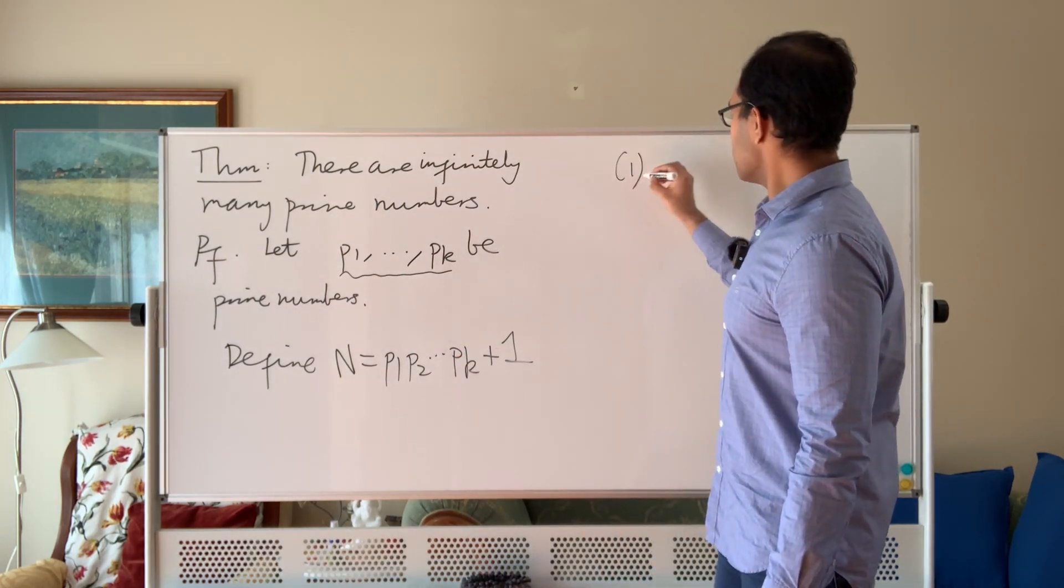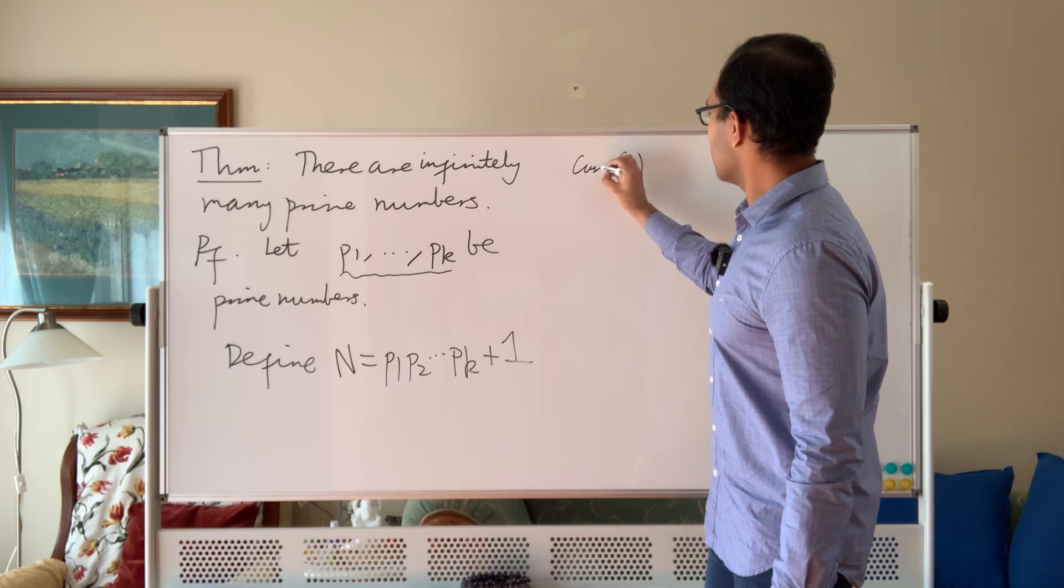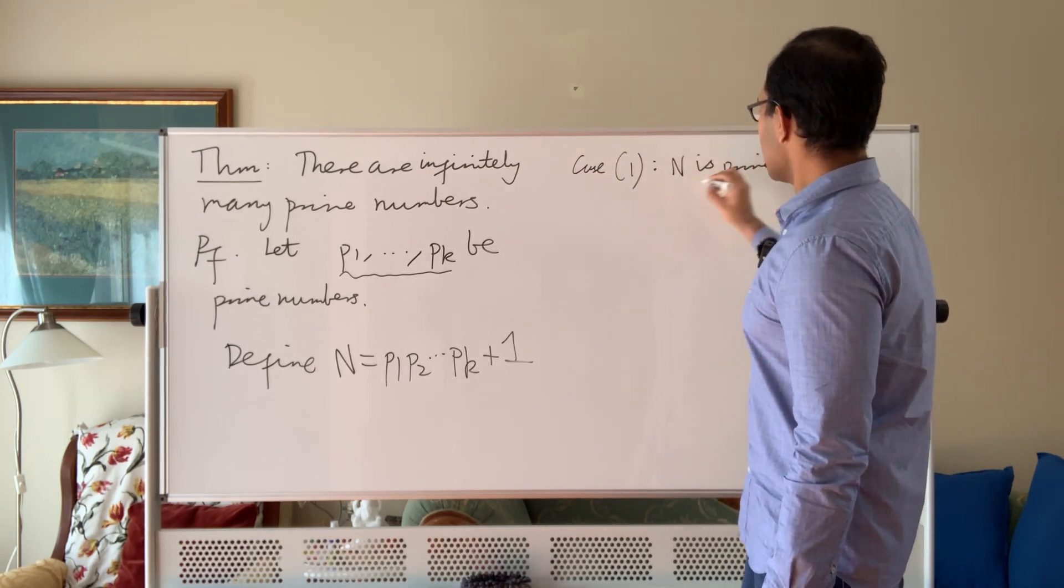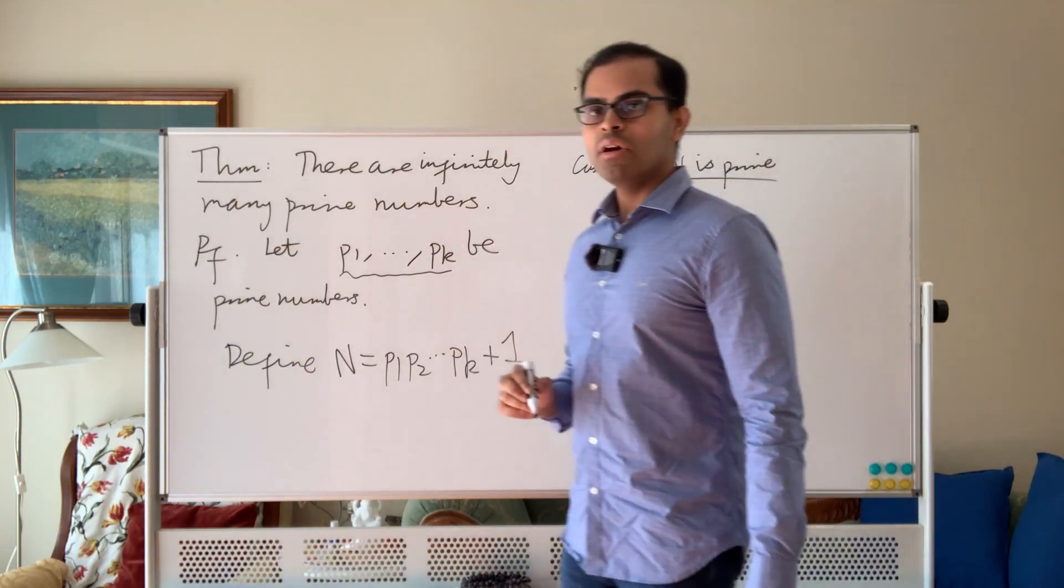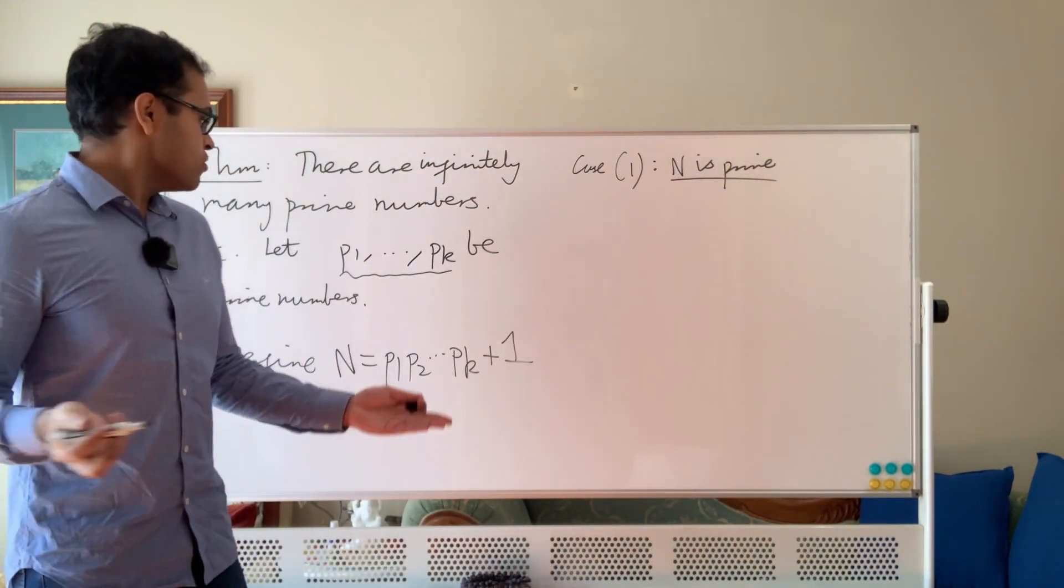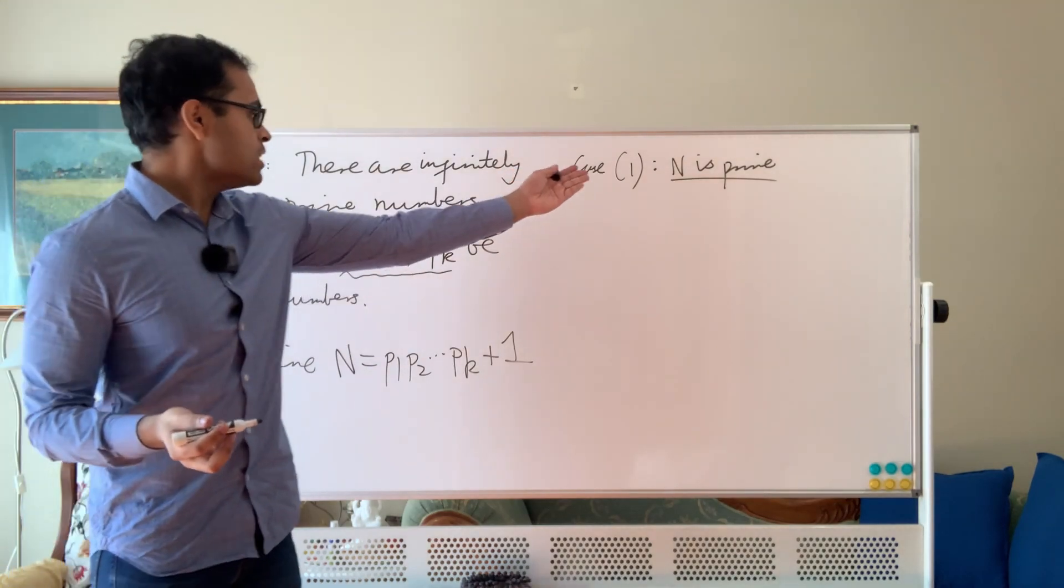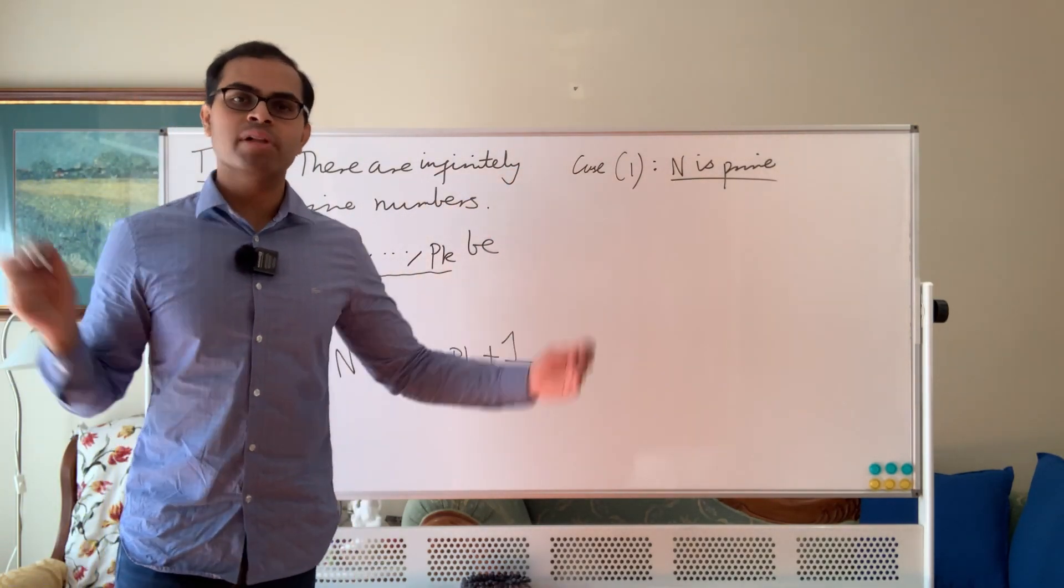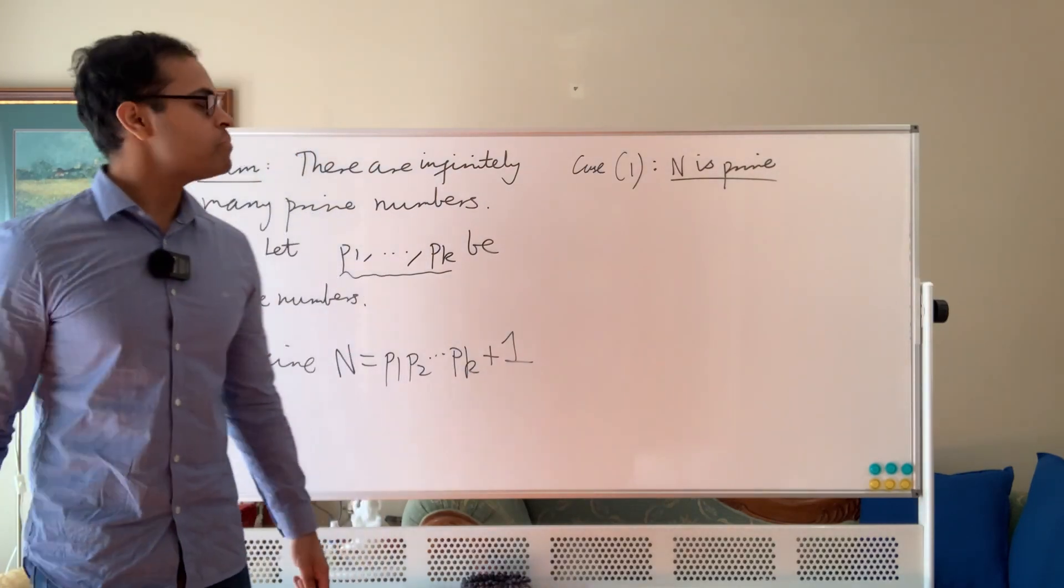So there are two possibilities: Case 1, N is prime. That means N is not divisible by anything other than one and itself. But in that case, N is a prime that's not in the list. We've created a prime that's not in the list because N cannot be any of the P1 through Pk's because it's their product plus one. It's going to be much bigger than all of them.